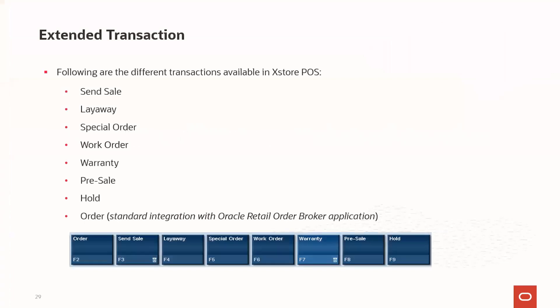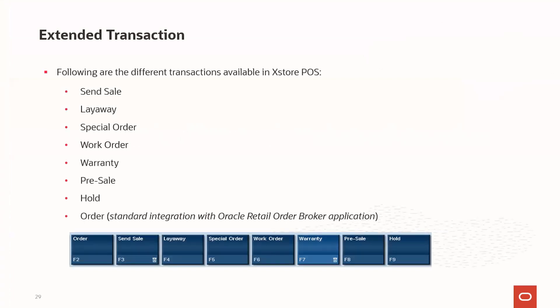What are the different transactions available in Xstore POS as part of the extended transaction system? The first is a sent sale transaction. The next is a layaway transaction. The third is a special order transaction. The fourth is a work order transaction. Another is a warranty. The next is a pre-sale. And the next is a hold transaction. If the Xstore system is integrated with the Oracle Retail Order Broker application, then another transaction available is an order transaction.